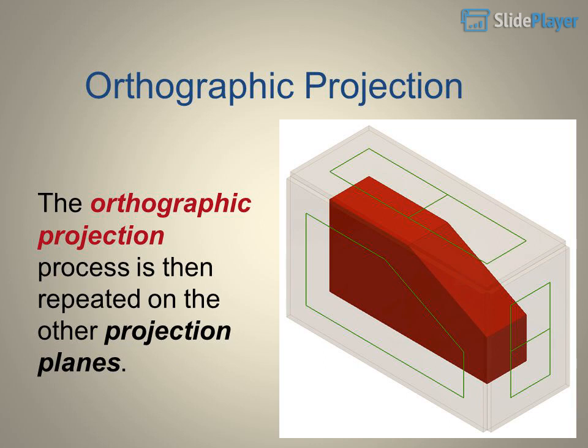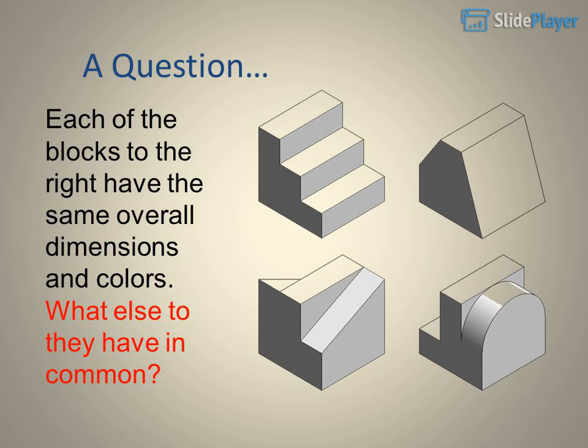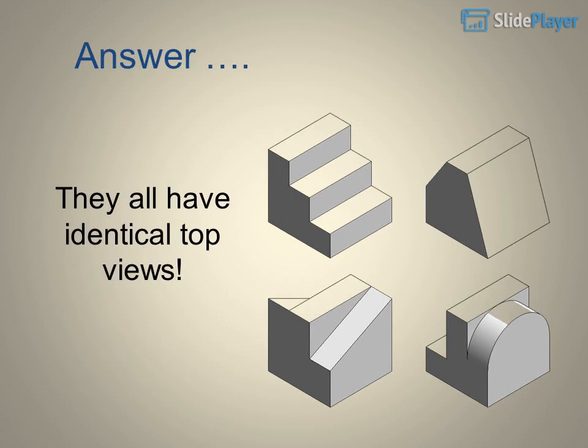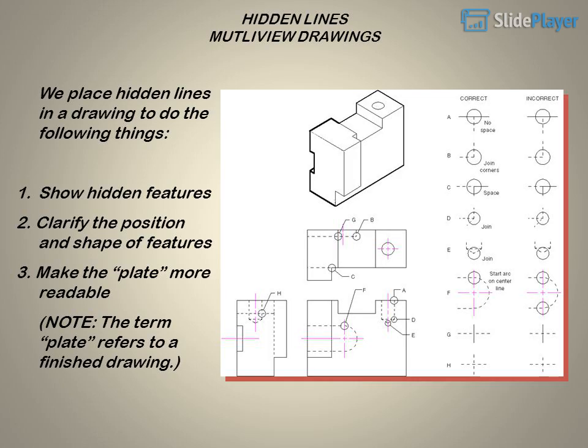Consider this question: each of the blocks shown have the same overall dimensions and colors — what else do they have in common? They all have identical top views. In multi-view drawings, we place hidden lines to show hidden features, to clarify the position and shape of features, and to make the plate more readable. Note that the term 'plate' refers to a finished drawing.